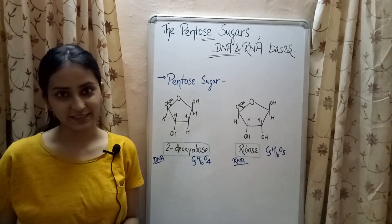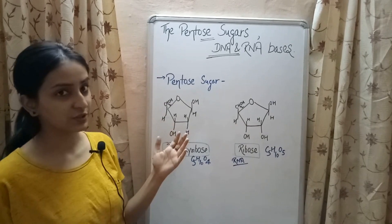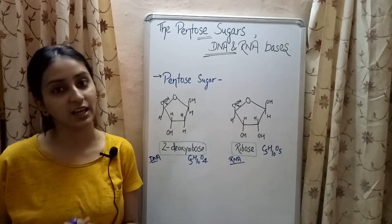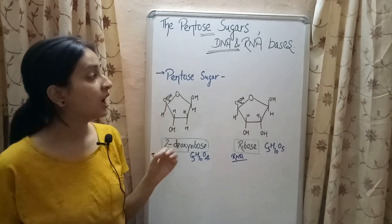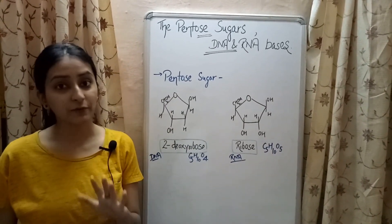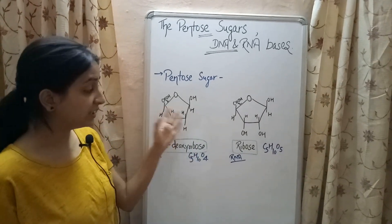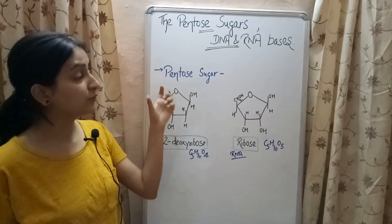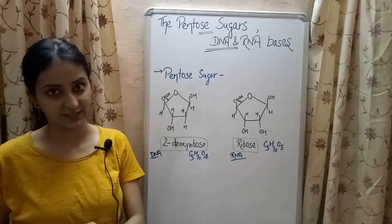Welcome to Biology at Ease. In this video, I will be discussing pentose sugars and the nitrogenous bases present in DNA and RNA. So let's start with pentose sugars. Pentose refers to the monosaccharides having 5 carbon atoms. Each nucleic acid, be it DNA or RNA, consists of a pentose sugar which forms the polymeric backbone of that nucleic acid.